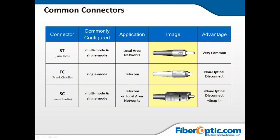Here are the three main 2.5 mm connectors: ST, FC, and SC. The ST was the first connector on the scene. Then they improved to the FC — it has a threaded outer jacket for a more secure connection. Then they went to a plastic housing in the SC, which is cheaper to manufacture and drives the price down while still being a quality connector. The SC is really the main connector used nowadays. All of these are 2.5 mm ferrule diameter.